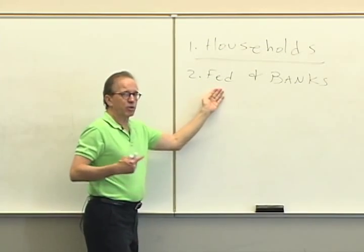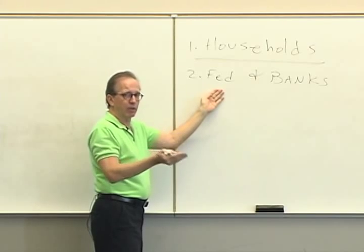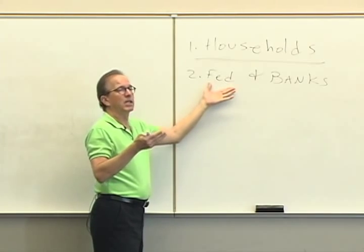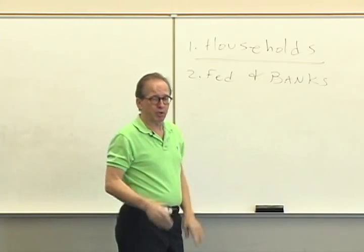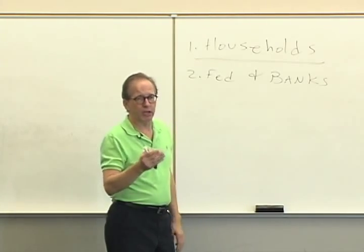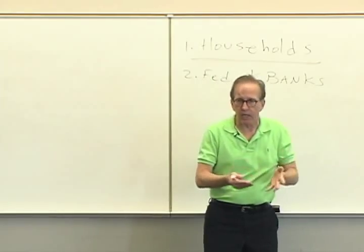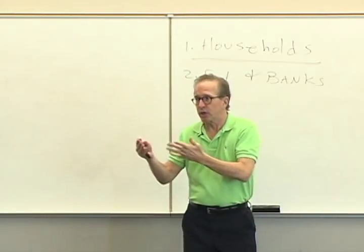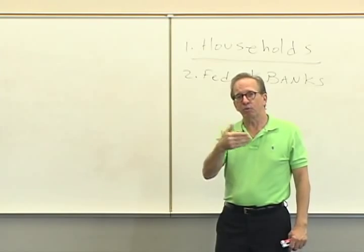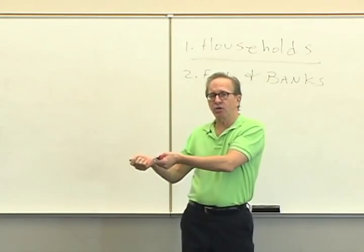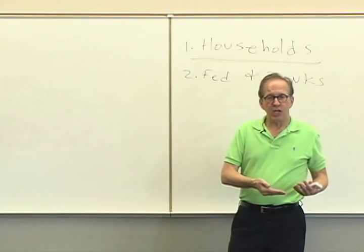Consider if the Federal Reserve decides the economy is not performing very strongly and it wants to give it a little boost. The first step is the Fed will go to bankers and say: we'd like to buy some treasury bonds from you. The second thing that happens is the bankers turn their bonds over to the Federal Reserve, and the Federal Reserve pays them by crediting their reserve account. The bankers have handed over bonds to the Fed and received funds back — and now those funds are just sitting there not earning interest.